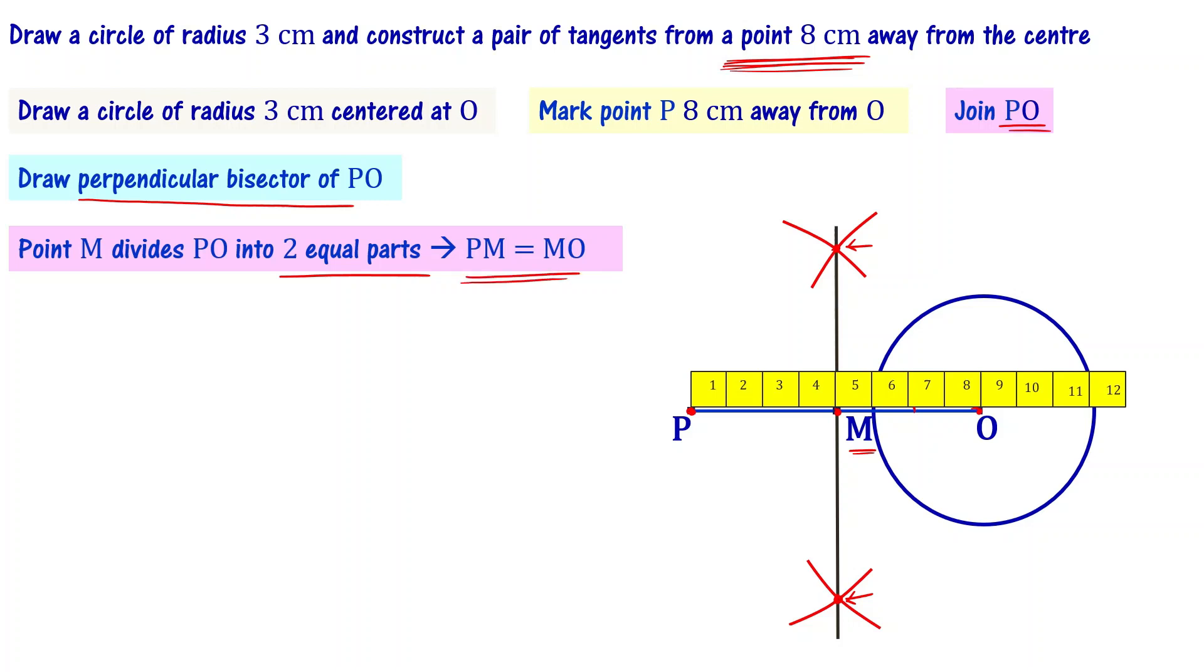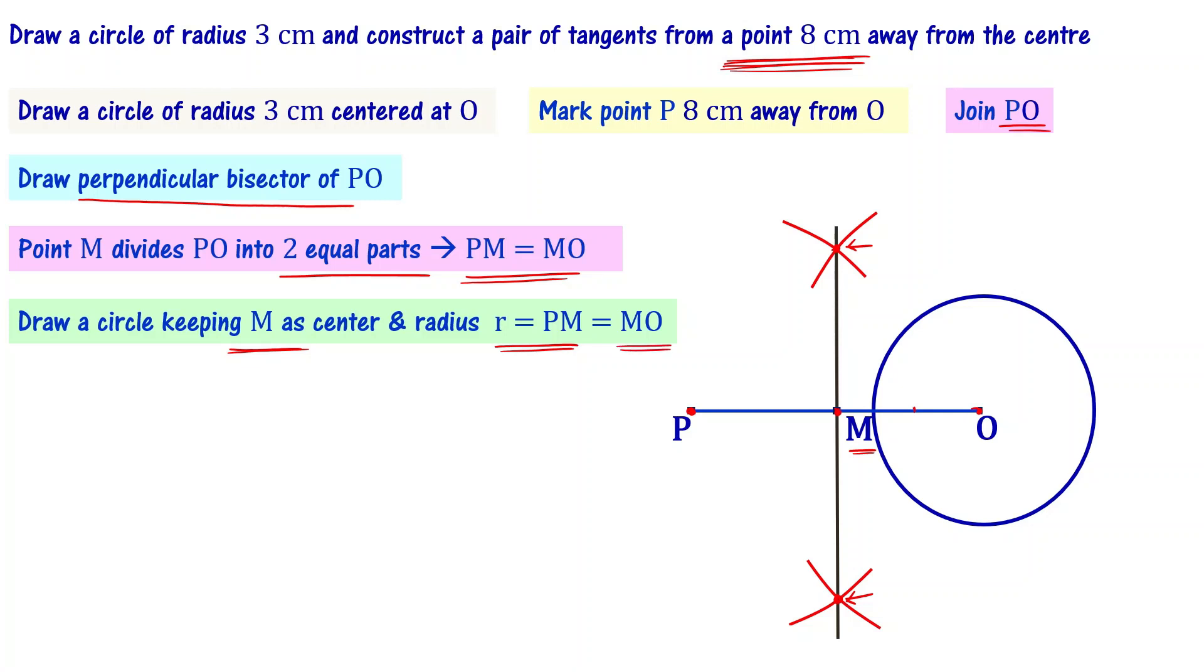Once you are done with this step, the next step is to draw a circle keeping M as the center and having radius r equal to PM or that is equal to MO. Place needle at position M and pencil at O, then draw a circle.